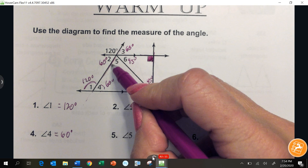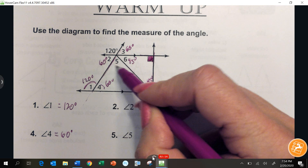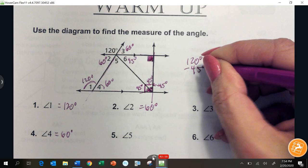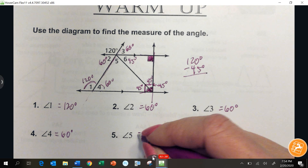I know that angle 5 and 6 added together has to be 120, so I took 120 and subtracted 45 degrees. That left me with angle 5, 75.